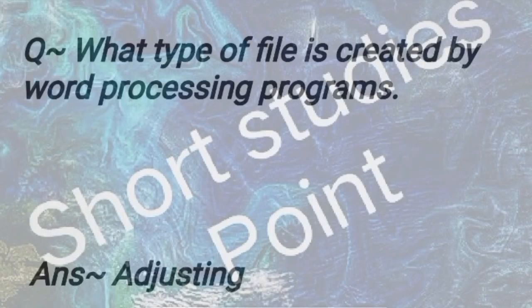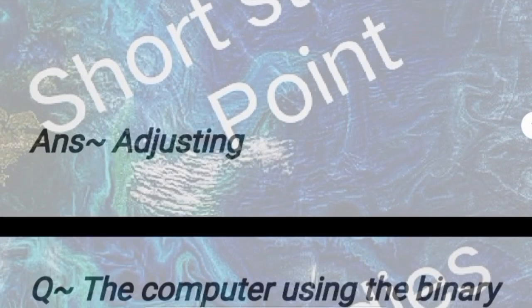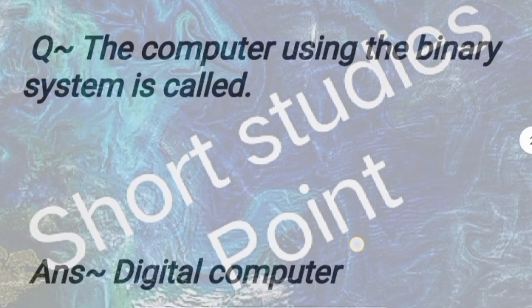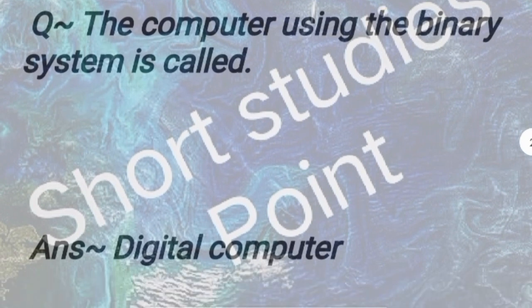Question: What type of file is created by a word processing program? Answer: Document file. Next question: The computer using the binary system is called? Answer: Digital computer.